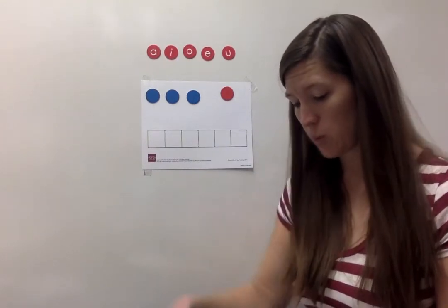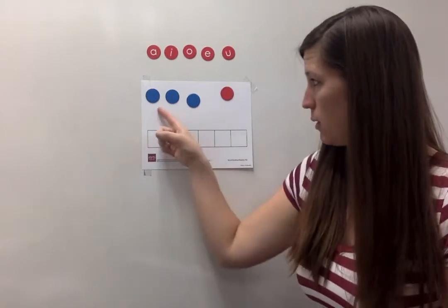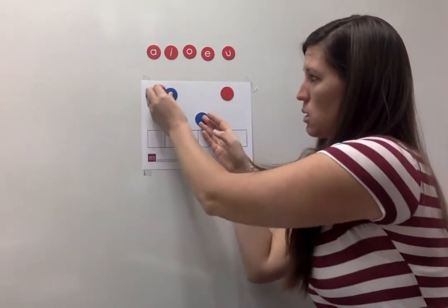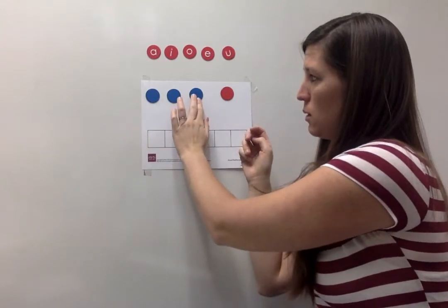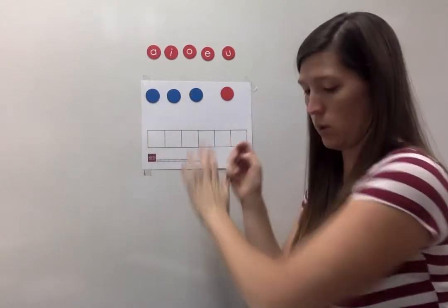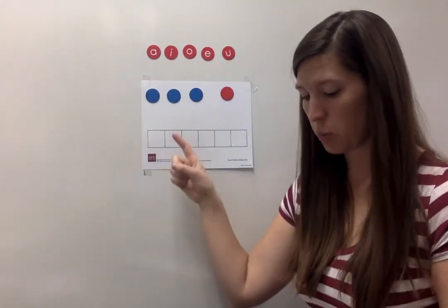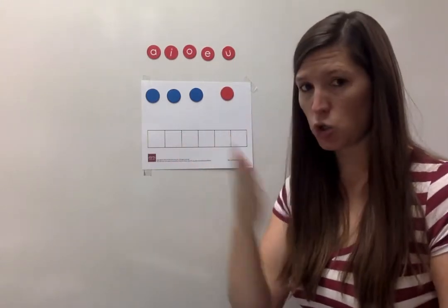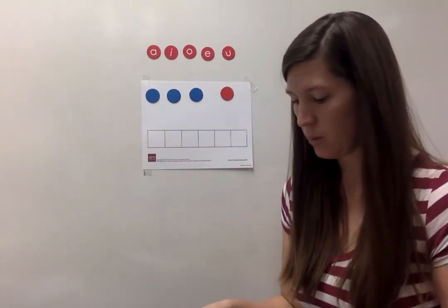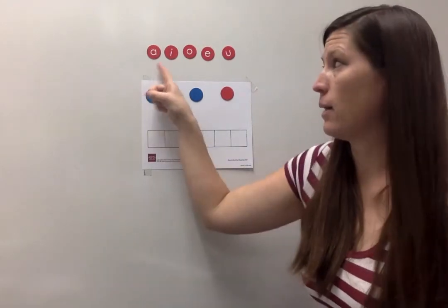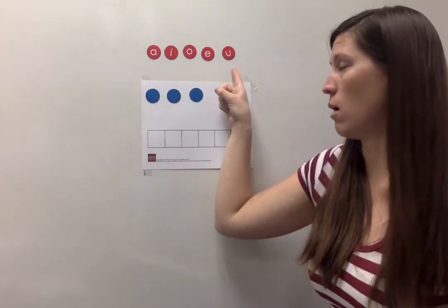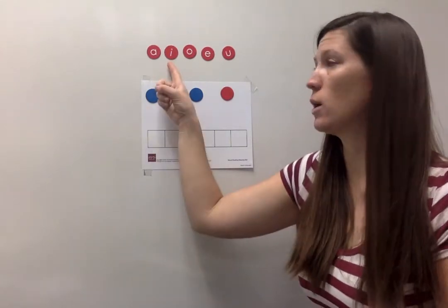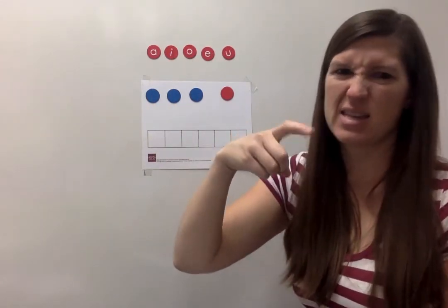I'm going to use my colored chips that represent the sound. The blue chips represent consonant sounds. The red chip represents a short vowel sound — those short vowel sounds: A, I, O, E, U. Today we're going to be focusing on short I.